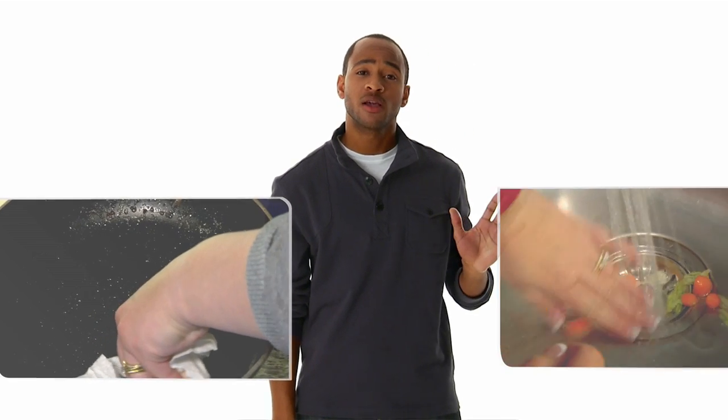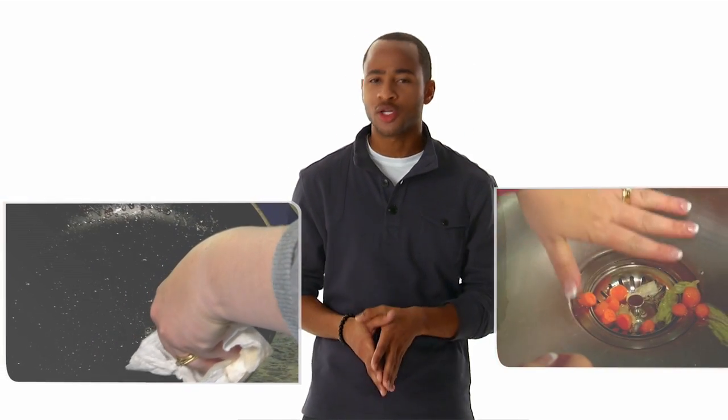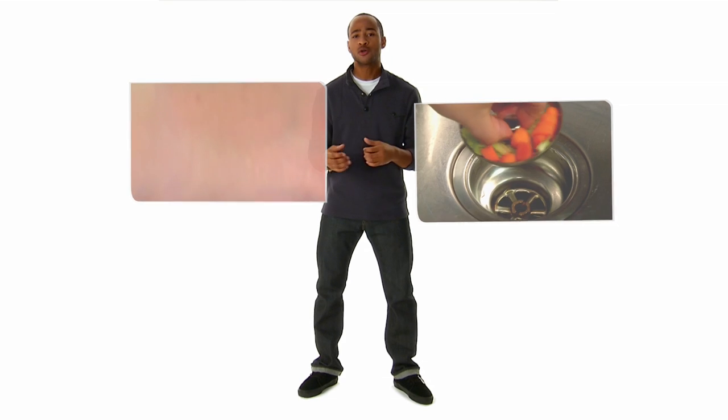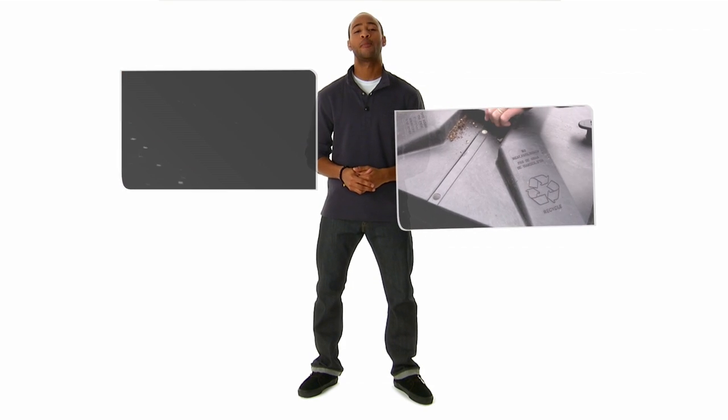Wipe greasy pots, pans, and utensils with paper towels before putting them into the sink. Put a strainer into your sink to catch food scraps and other solids. Then lift out the strainer and dispose of the waste in your garbage or composter.